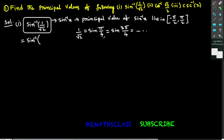Which one do we need to choose? You have to choose the value of theta which lies in the closed interval minus pi by 2 comma pi by 2. Does pi by 4 belong to this interval? Yes. What about 3 pi by 4? 3 pi by 4 means 135 degrees. Does 135 degrees lie in the closed interval minus pi by 2 comma pi by 2? No. So we choose sin pi by 4.